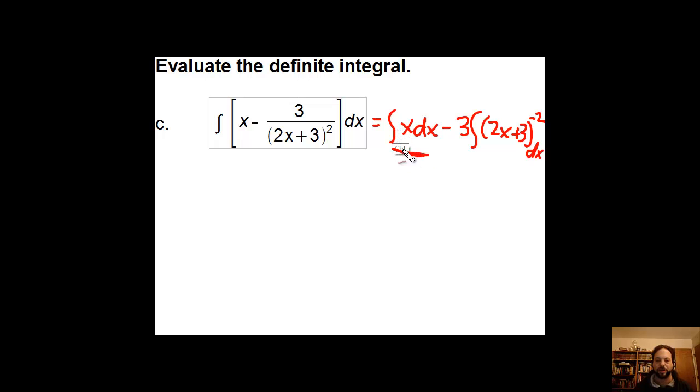This first one right here is a fairly easy integral to deal with, that's just going to be one half x squared plus c. That's basic. As far as this other integral, I see that we're going to have a u substitution in effect. We're going to say that u is 2x plus 3, du will be 2 dx.